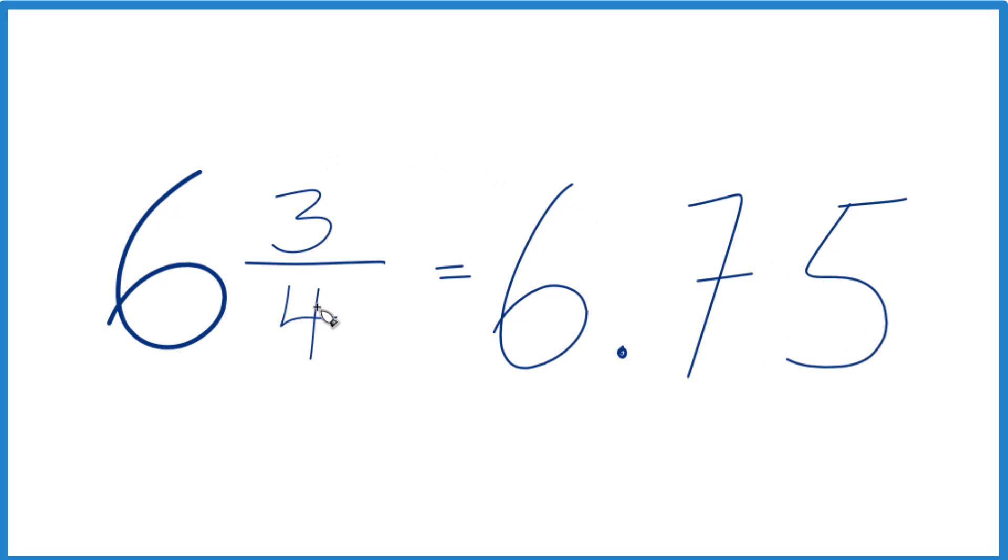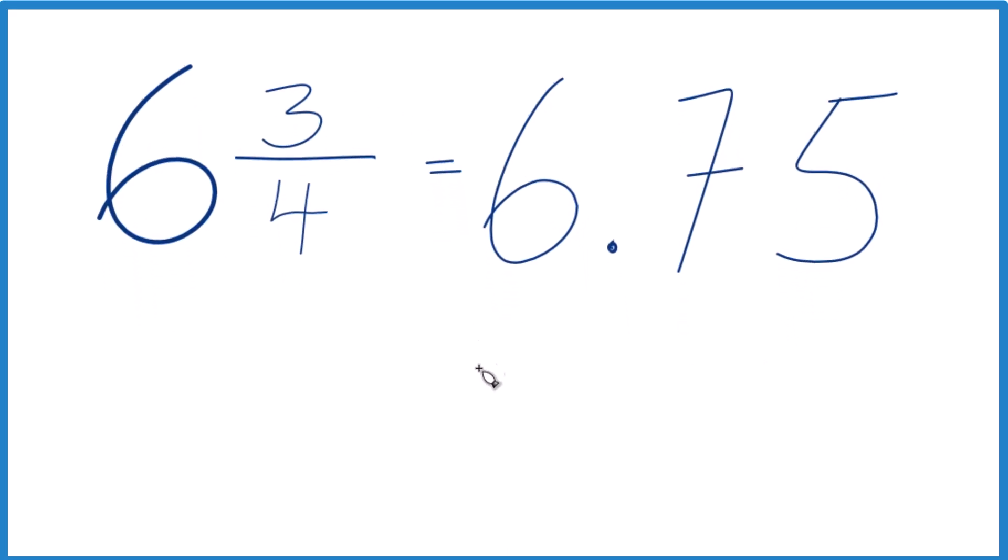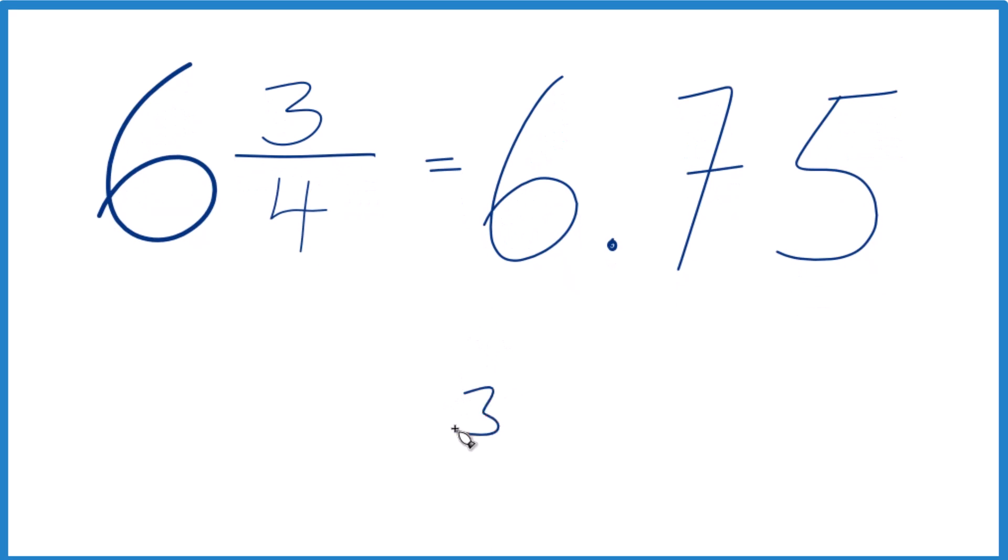So we could take three and see how many times four goes into three. Four doesn't go into three, but we could call it 30 if we put a zero and a decimal point here.